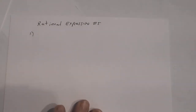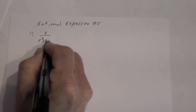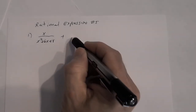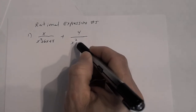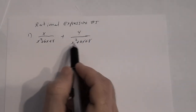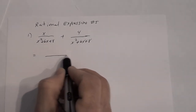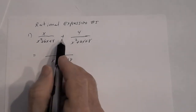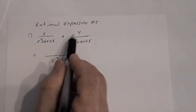Number one: we have x divided by x squared plus 6x plus 8, and we're adding this to 4 divided by x squared plus 6x plus 8. Notice that these two rational expressions have the same denominator, so right away I can write this as one rational expression with that denominator. Since this is an addition problem, the numerator is just going to be x plus 4.